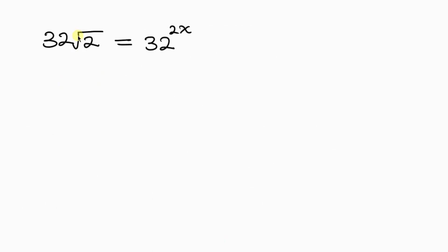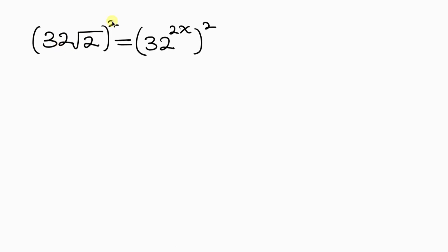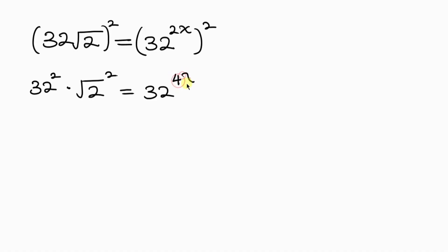Our next step is to get rid of the remaining outer square root by squaring both sides again. The square affects the 32 and the outer square root, giving 32 squared times the square root of 2 squared, equal to 32 to the power of 4x (since the powers multiply: 2x times 2 gives 4x). 32 squared is 1024, and the square cancels the square root, leaving 1024 times 2 equal to 32 to the 4x.